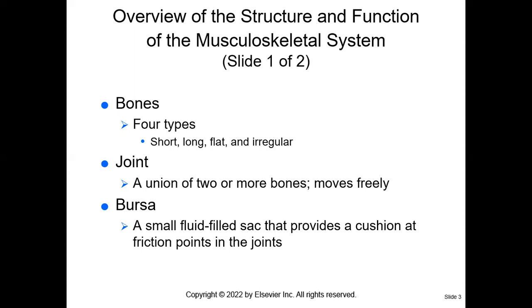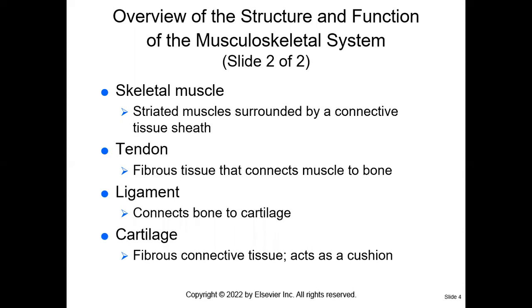The bones of the skull protect the brain. The immovable joints of the skull are called sutures. Bursa are small fluid-filled sacs that provide cushion at friction points in freely movable joints. If a patient has bursitis, there's an inflammation of the bursa.